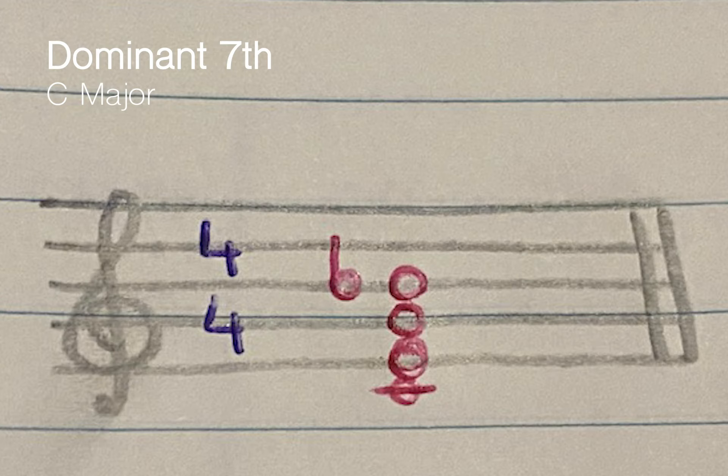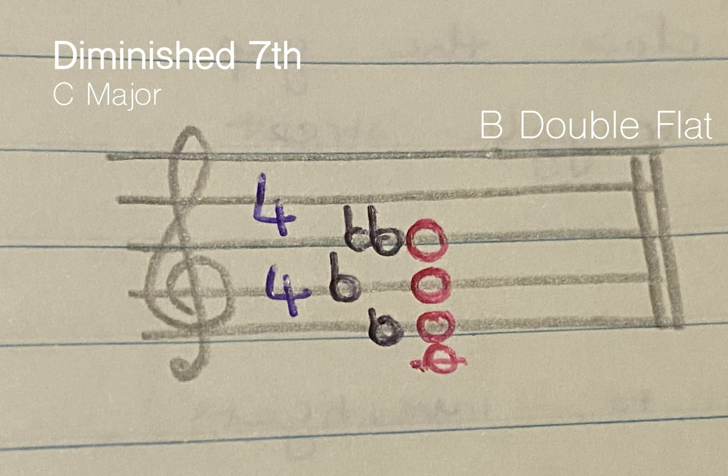So then next we have the diminished seventh chord. Now some people find it a little bit tricky, but that's okay. All you really need to know about the diminished seventh chord is that it builds up on minor triads. So we have a look at C major again, we count from C to get to a minor triad.